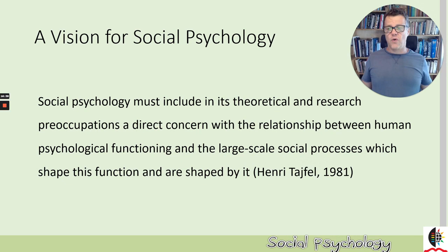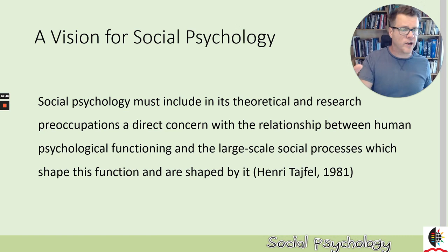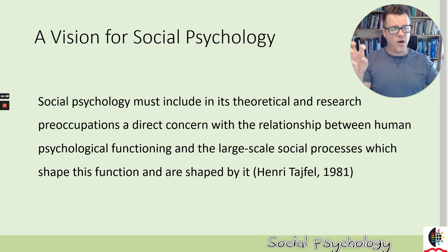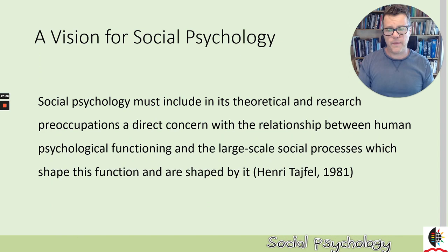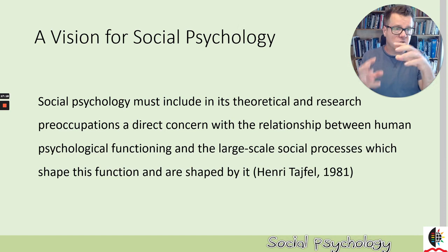Here's the vision for social psychology: social psychology must include in its theoretical and research preoccupation a direct concern with the relationship between human psychological functioning — well-being, wealth, our collective mental health — and large-scale social processes, for example processes around segregated neighborhoods, around inequality, and how our psychology serves to produce these social orders, and how our psychology is in turn shaped by these social orders. And there's a quote from the father figure of social psychology, Henri Tajfel.